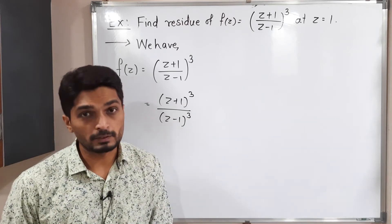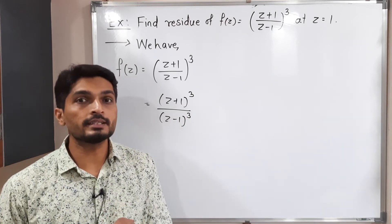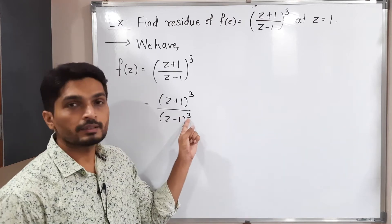z plus 1 cube divided by z minus 1 cube. Simply, I took separate power. So easily you can say z is equal to 1 is a pole of order 3.